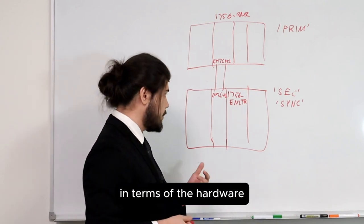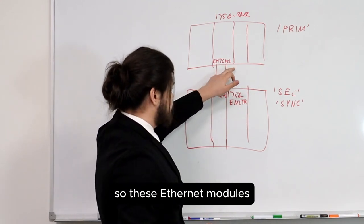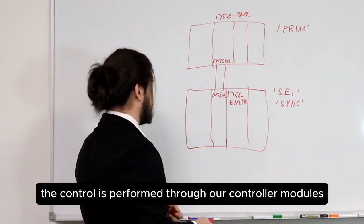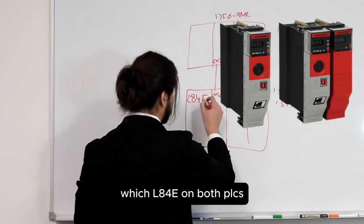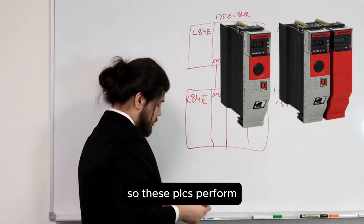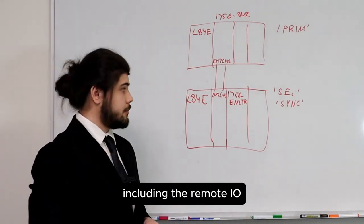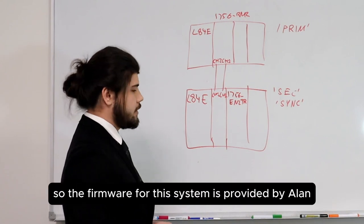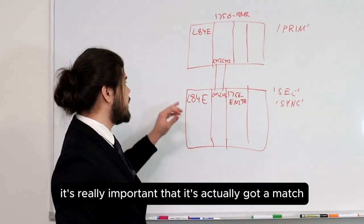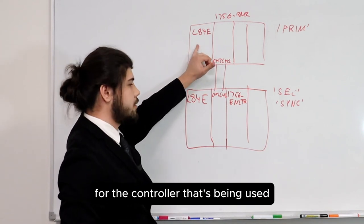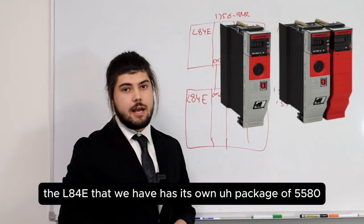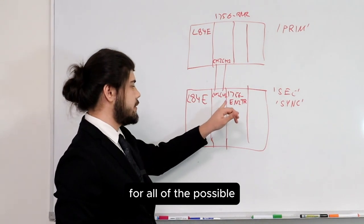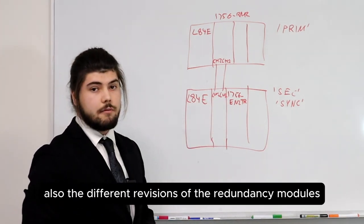The modules must match — that's an important hardware consideration. These Ethernet modules are connected to our remote IO rack, which allows us to control the system externally. Control is performed through our controller modules, which are L84 E's on both PLCs. An important consideration is firmware. The firmware for this system is provided by Allen Bradley and it's really important that it matches the controller being used. The L84 E has its own firmware package — the 5580 family controllers — which provides firmware for all the possible different communication modules and different revisions of the redundancy modules.